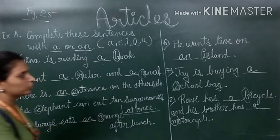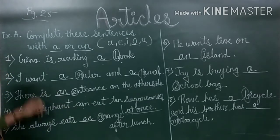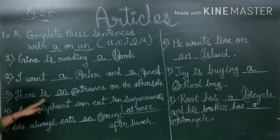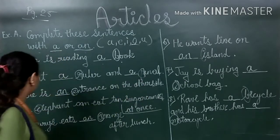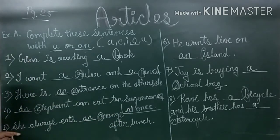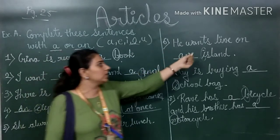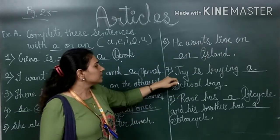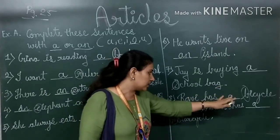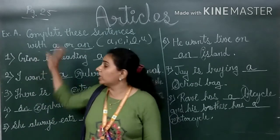Let me read all the questions one more time so you understand easily. Please write along with me in your book. Gina is reading a book. I want a ruler and a pencil. There is an entrance on the other side. An elephant can eat 10 sugarcanes at once. Ravi has a bicycle and his brother has a motorcycle. This was Exercise A.